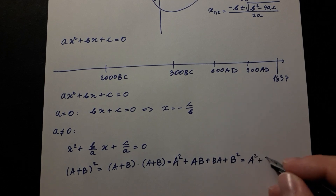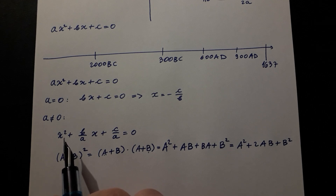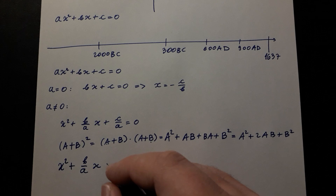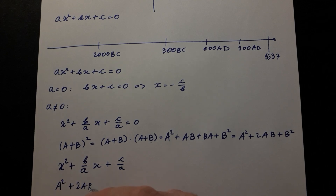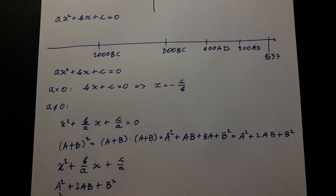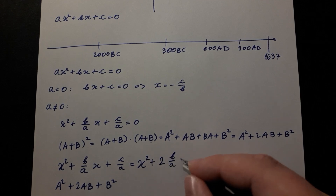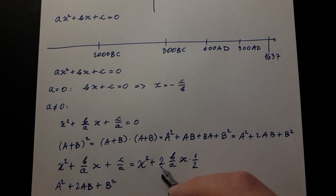That is equal to a squared plus 2ab plus b squared. In our equation we have x squared and b over a times x. Comparing with the perfect square form a squared plus 2ab plus b squared, x squared plays the part of a squared. This means 2ab corresponds to b over a times x, so rewriting: x squared plus 2 times (b over 2a) times x, where b over 2a plays the role of b in the perfect square.